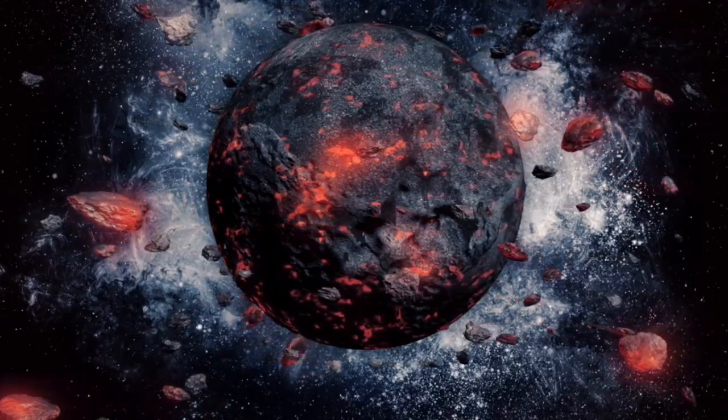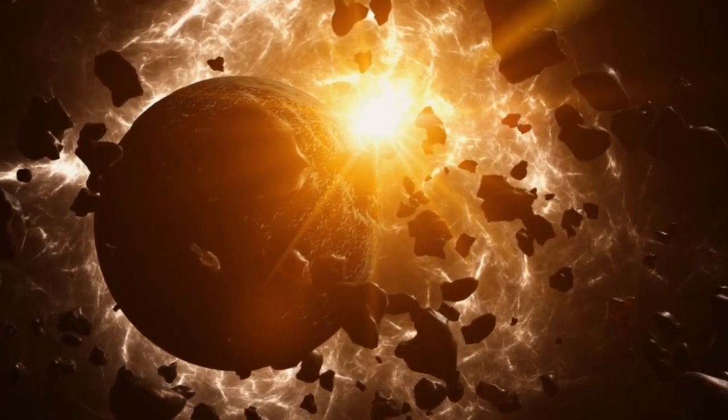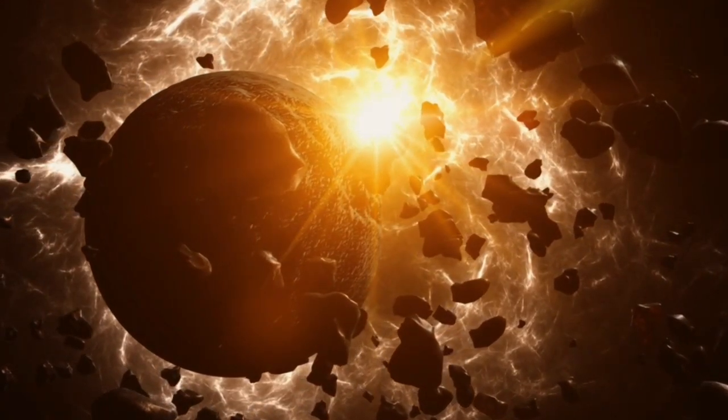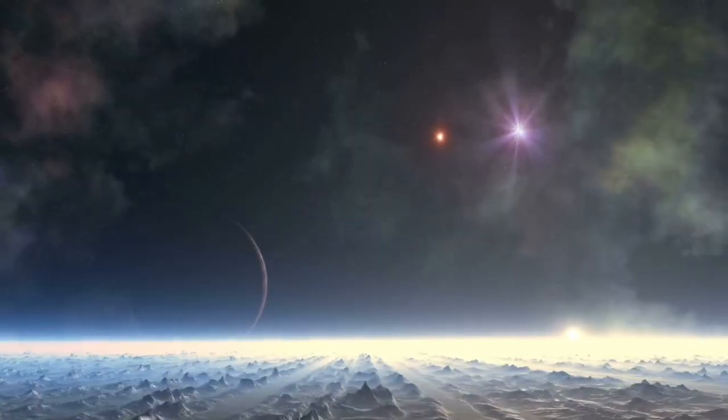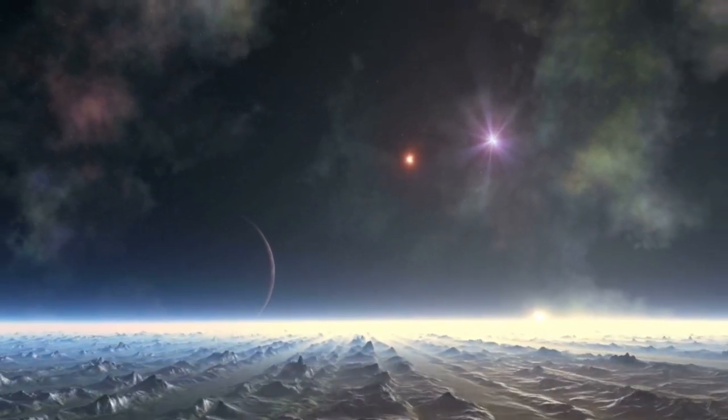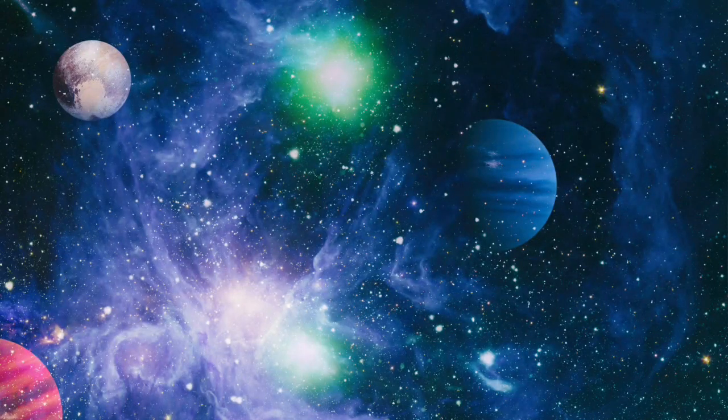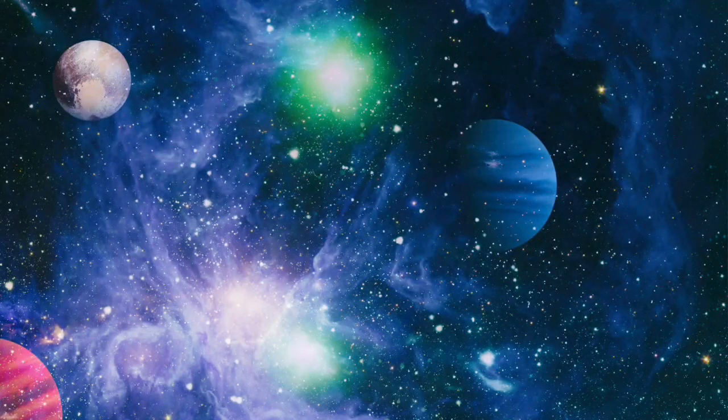Located in its star's life-supporting zone, the planet may absorb and emit infrared radiation essential for life, making it detectable by Webb's powerful sensors. This instrument's ability to register faint emissions from the planet's surface aids scientists in identifying signs of water or an atmosphere.